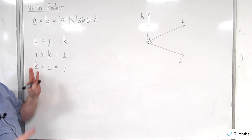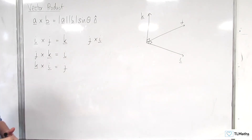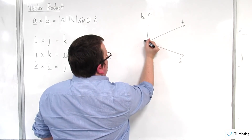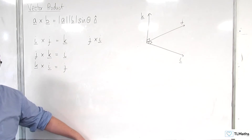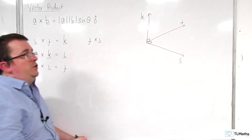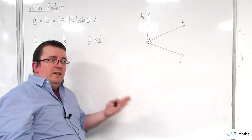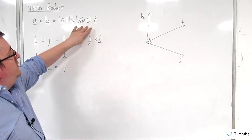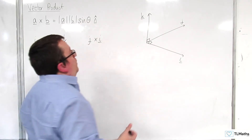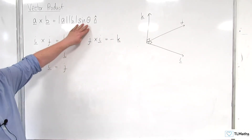Now what happens if we go the other way round? What if we've got j cross i? Well, j cross i is now looking at going — if we were measuring the angle right round — it would be 270 degrees or minus 90, because we could be going back on ourselves. You can either think that it's 270 degrees going anti-clockwise, or 90 degrees clockwise, which would be minus 90 degrees. Sine of minus 90 or sine of 270 is minus 1, so actually what we get is minus k, because of that sine of 270 degrees.